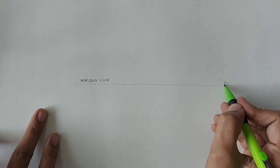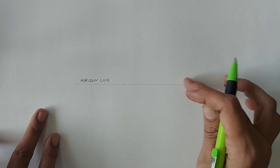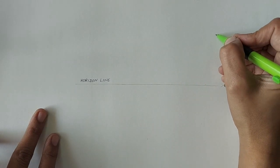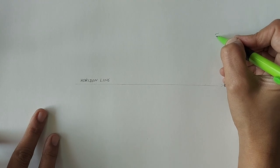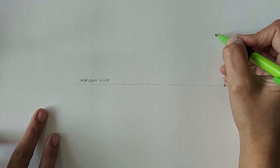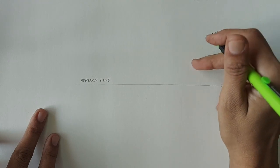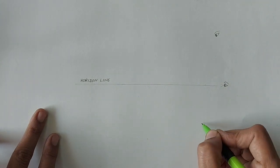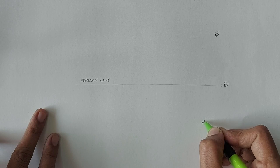Our eye level affects our drawing. When we see objects from a higher level, that is above the horizon line. And when you look at the object from down, that is below the horizon line.